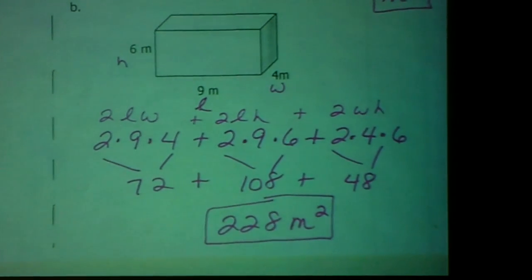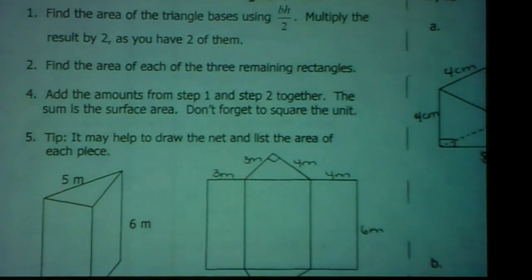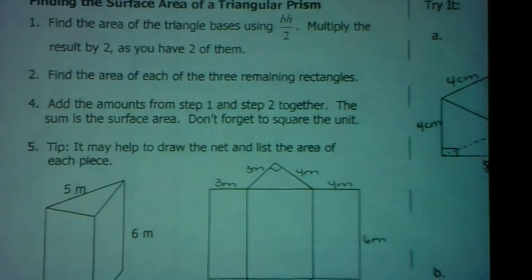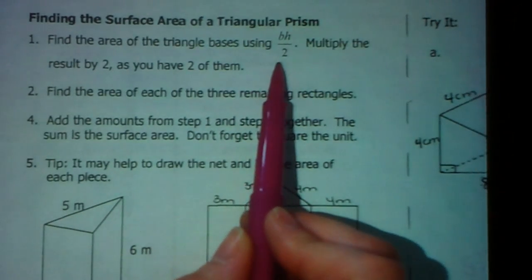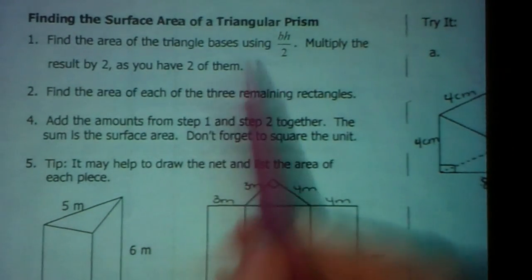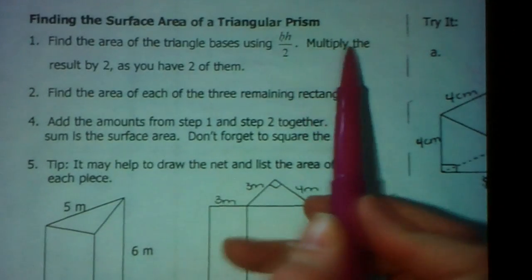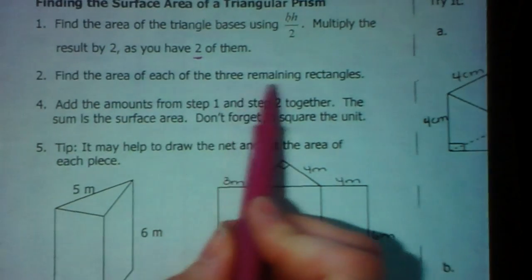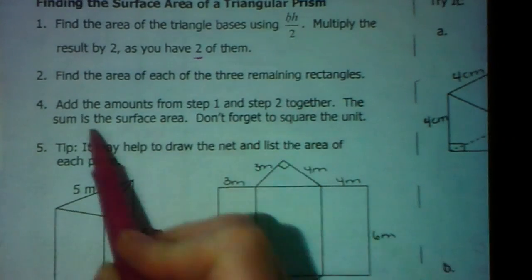All right, that was the easy part. Now welcome to the surface area of a triangular prism, where two of its bases — the top and bottom — are triangles. The area of a triangle can be found by taking base times height divided by 2, because a triangle is half of a rectangle. Here's the routine: find the area of the triangular bases using base times height divided by 2, then multiply by 2 because you have two of them. Then find the area of each of the three remaining rectangles and add all the amounts up. The sum is the surface area.